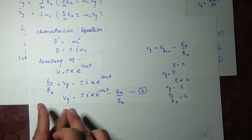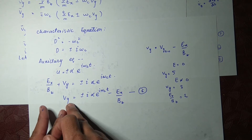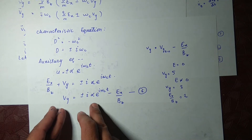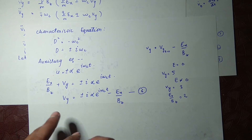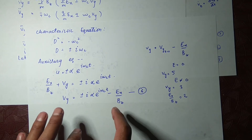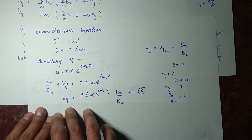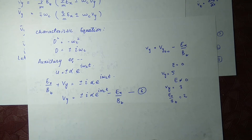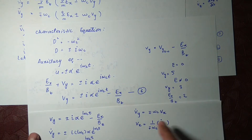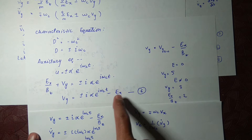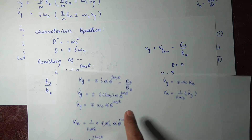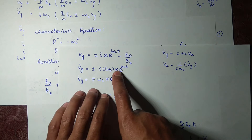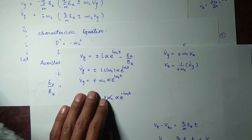Just like v_y, we have to calculate v_x and v_z. For the calculation of v_y and v_z, I wrote this equation here — same as equation number six — and then I took the time derivative of this equation.